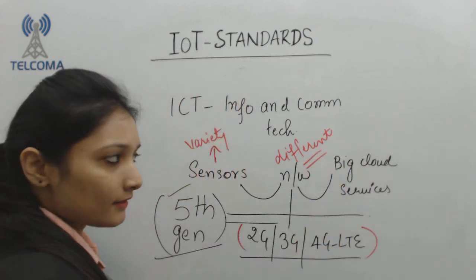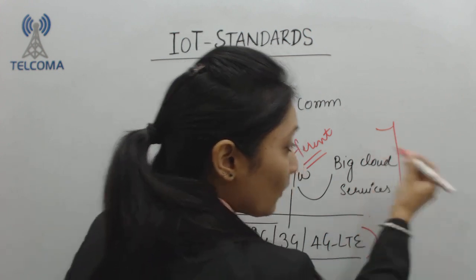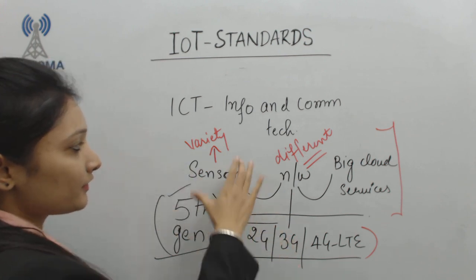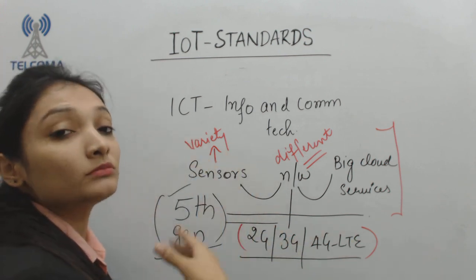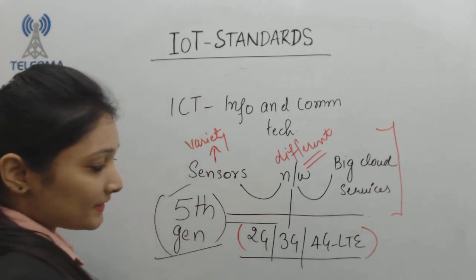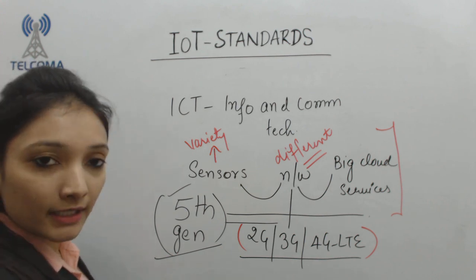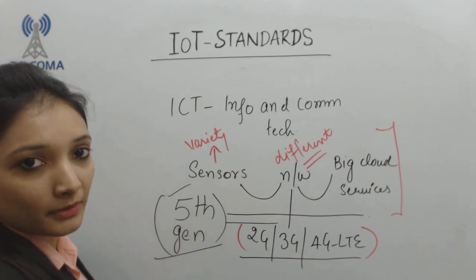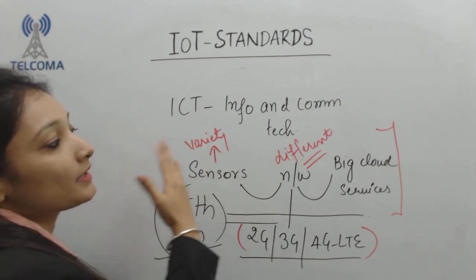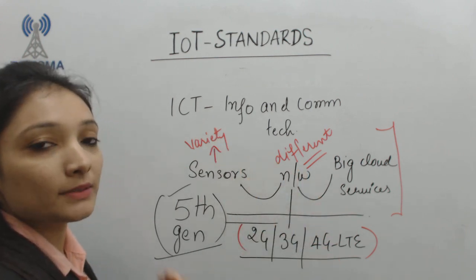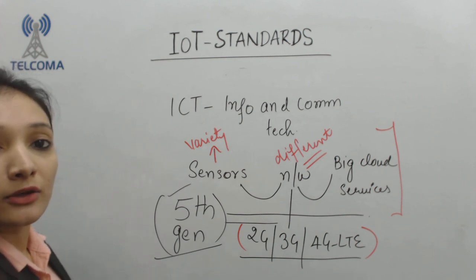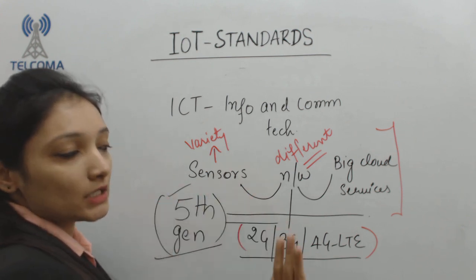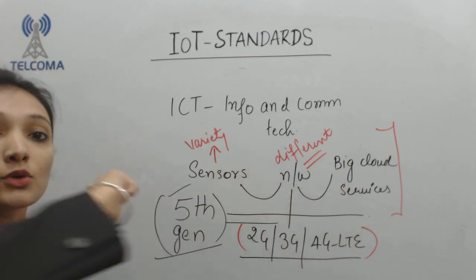We will have different connecting network interfaces and core services that include cloud services. This means we will have a variety of devices from different vendors using different network connectivity. These devices will need interoperability — they should be able to blend into and exchange information with devices in any kind of environment, not just their home environment.